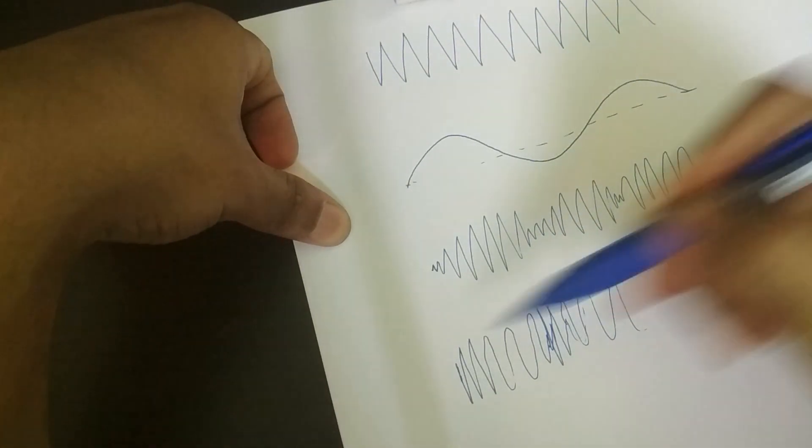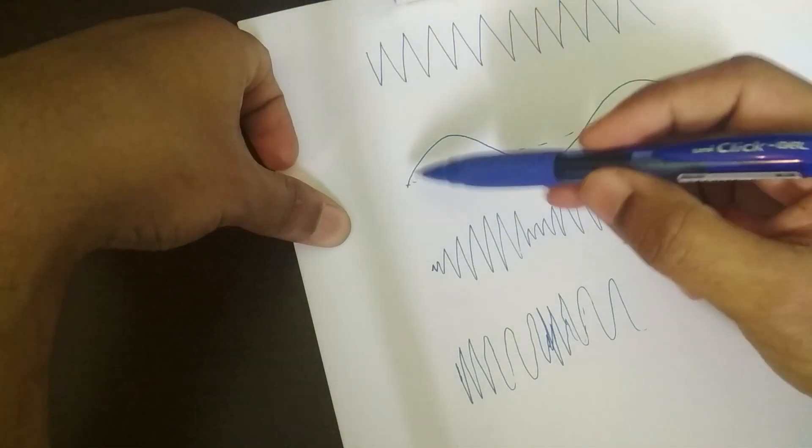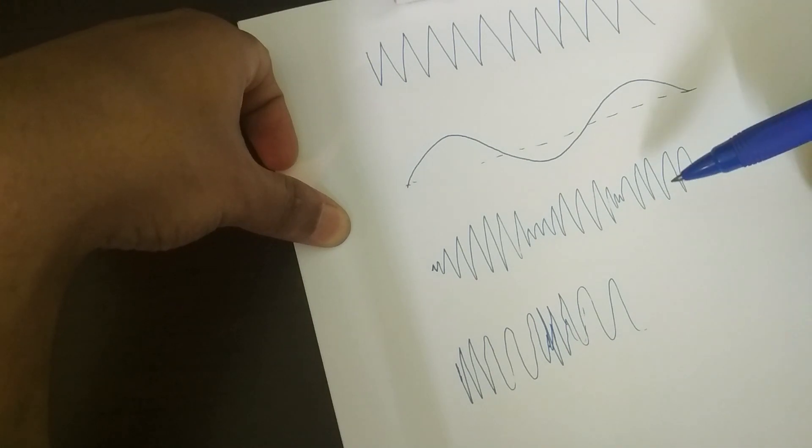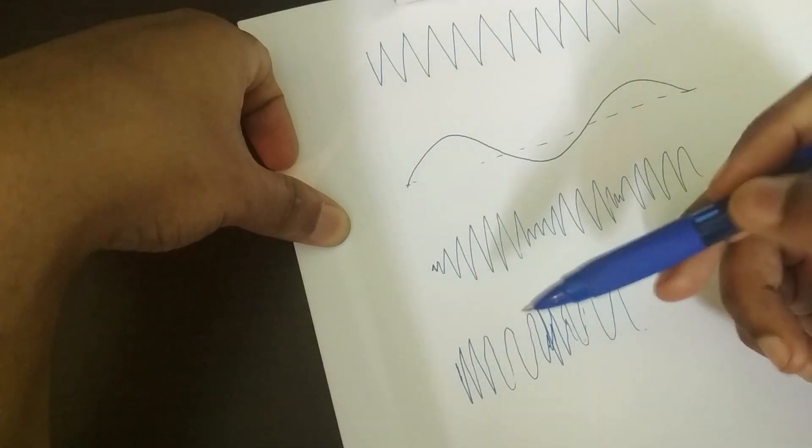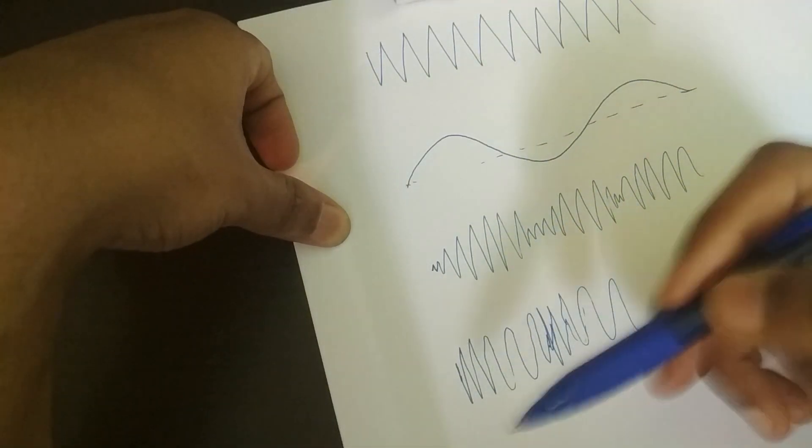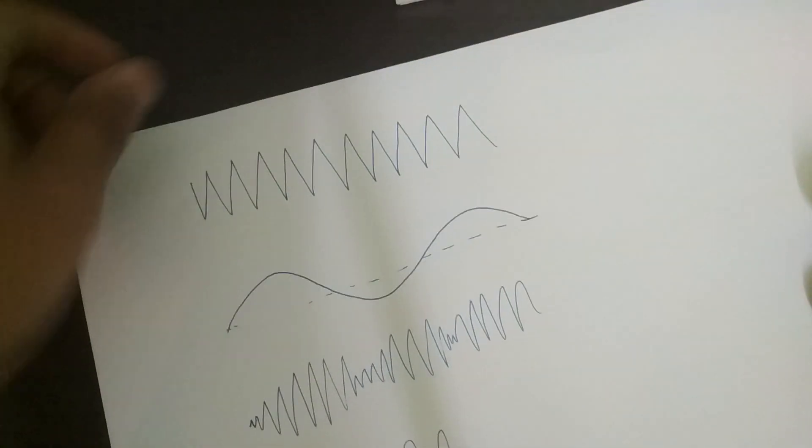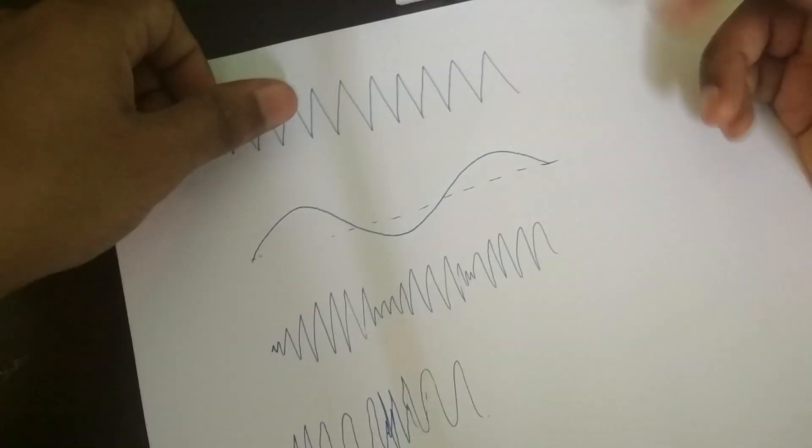So then what you're doing here, essentially, is you're using the low frequency signal to control a low pass filter. So you're doing low pass filtering, and then this would give you a kind of wow, wow, wow, wow kind of effect. Okay, so that's what modulation is.